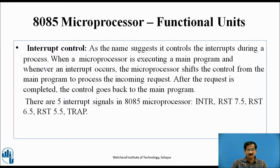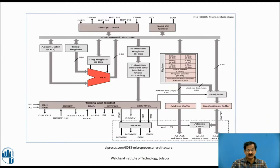Interrupt Control: As the name suggests, it controls interrupts during a process. When a microprocessor is executing a main program and an interrupt occurs, the microprocessor shifts control from the main program to process the incoming request. After the request is completed, control goes back to the main program. There are five types of interrupts: INTR, RST 7.5, RST 6.5, RST 5.5, and TRAP.